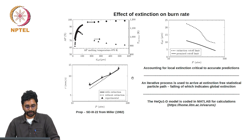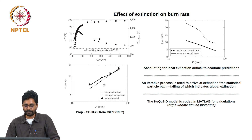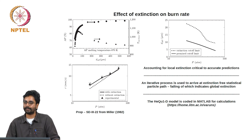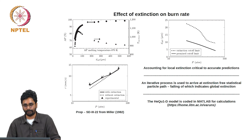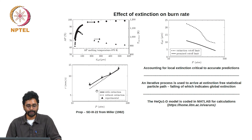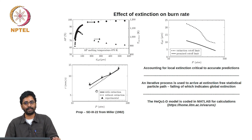There is no hard data available for validating the extinction limits for homogeneous compositions, but evidence was found by other means. This is a prediction for a particular composition taken from Miller 1982. When we do not account for extinction, the predictions are shown by the dotted line, and the data — triangles with about 10 percent error bars — show a deviation of about 20 percent. But when we account for extinction, the predictions are very good and even predict the change in slope with pressure.